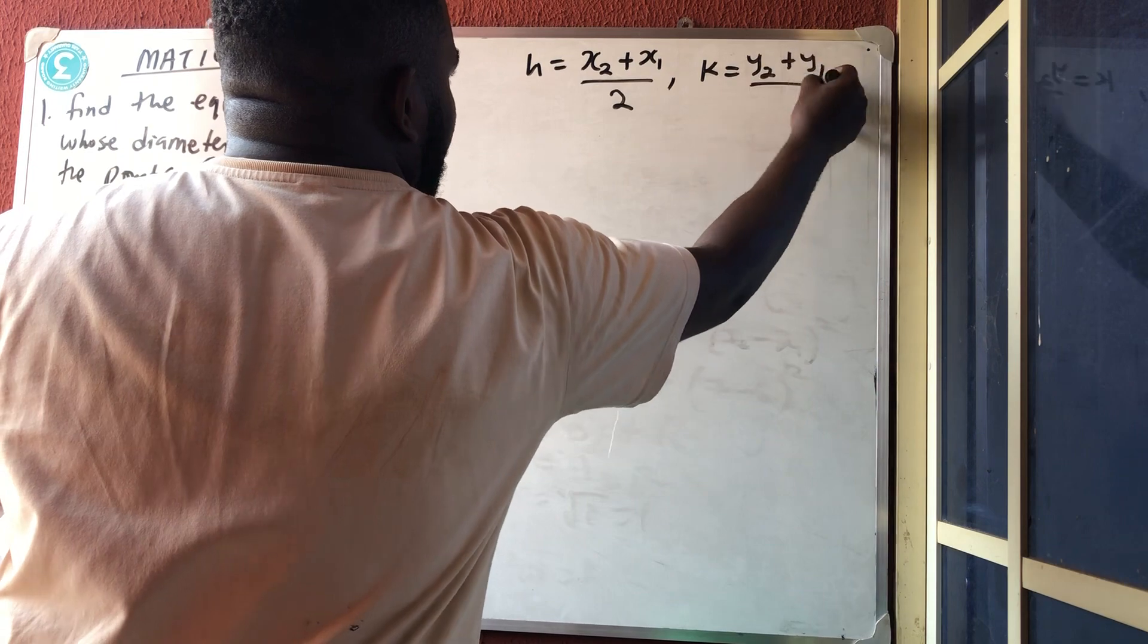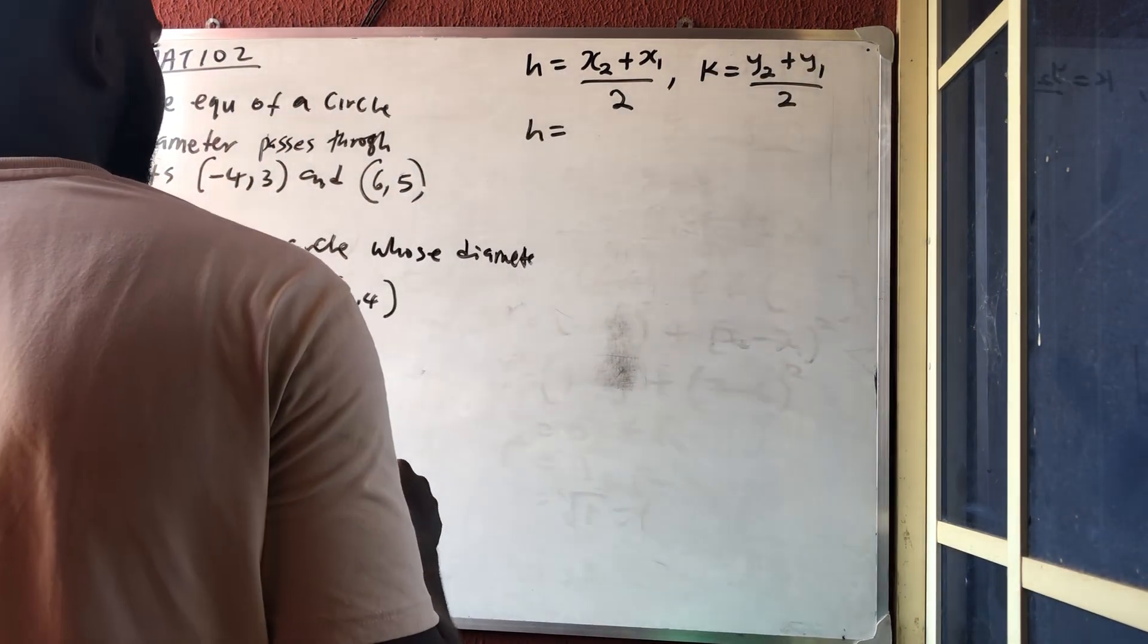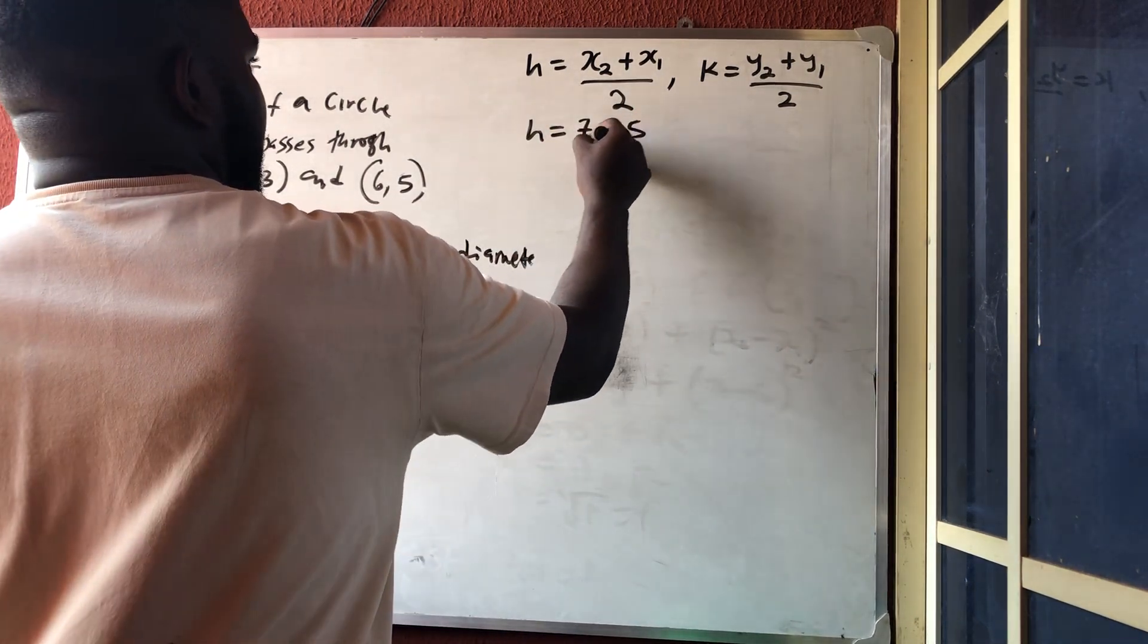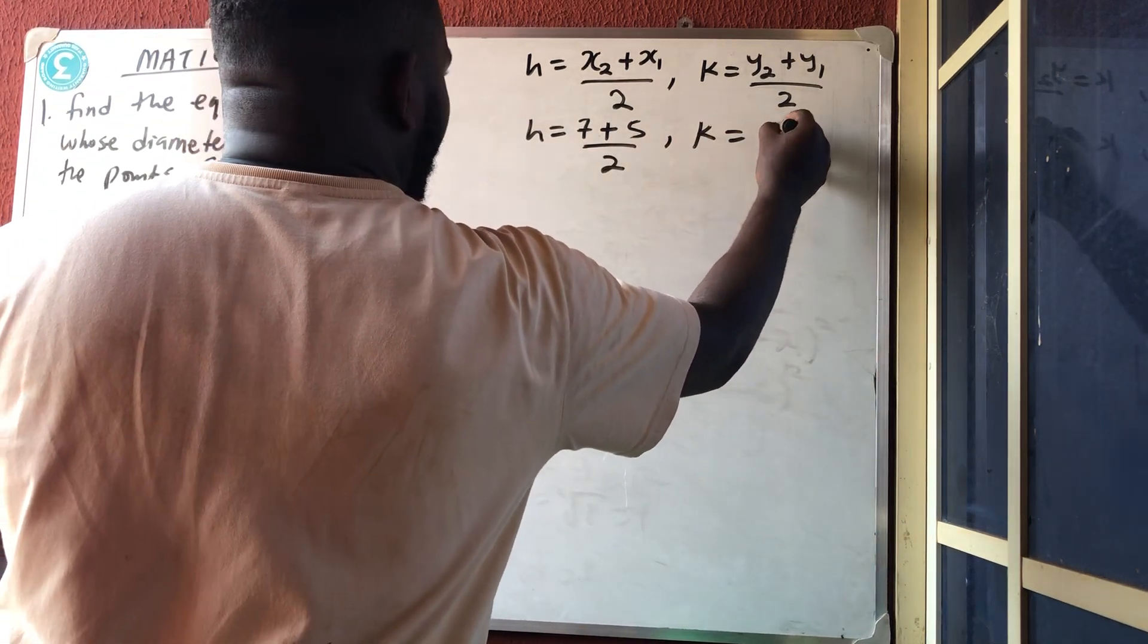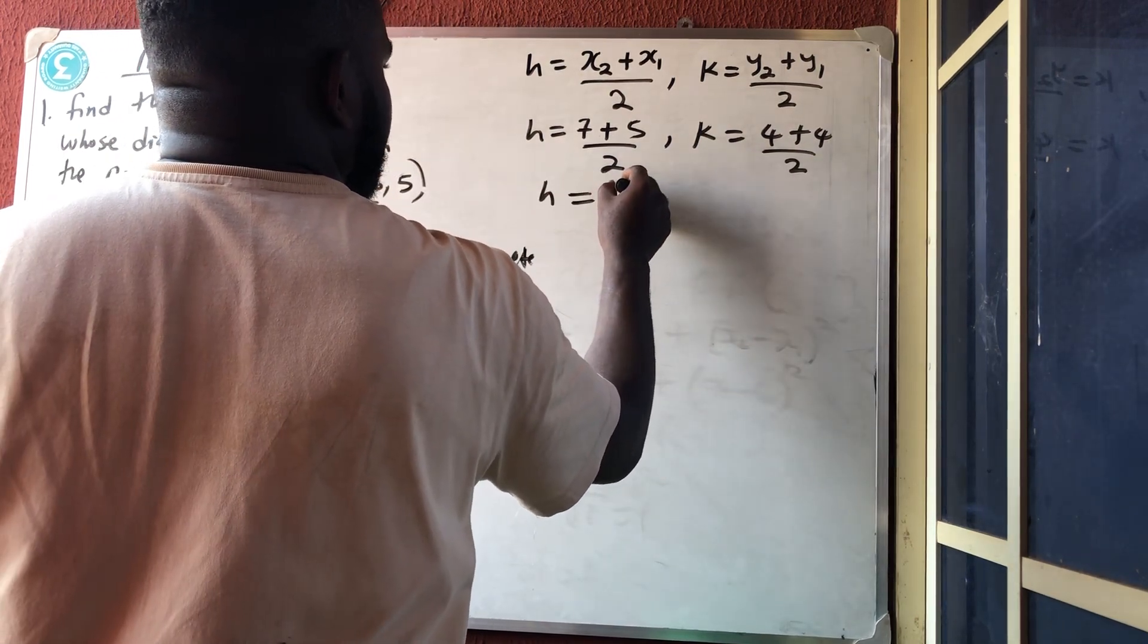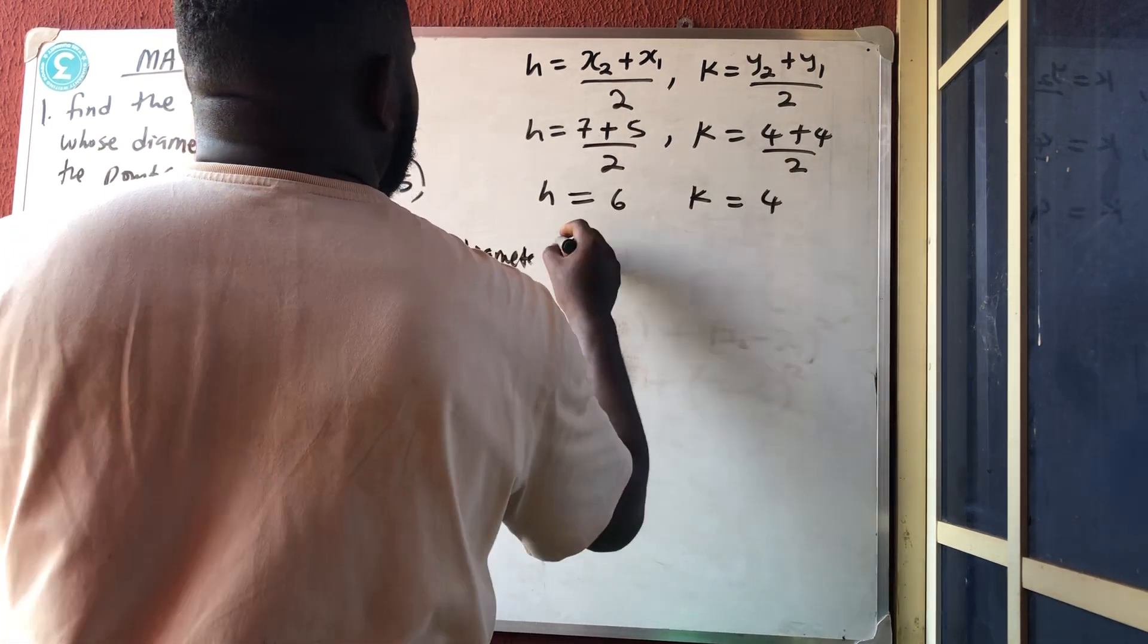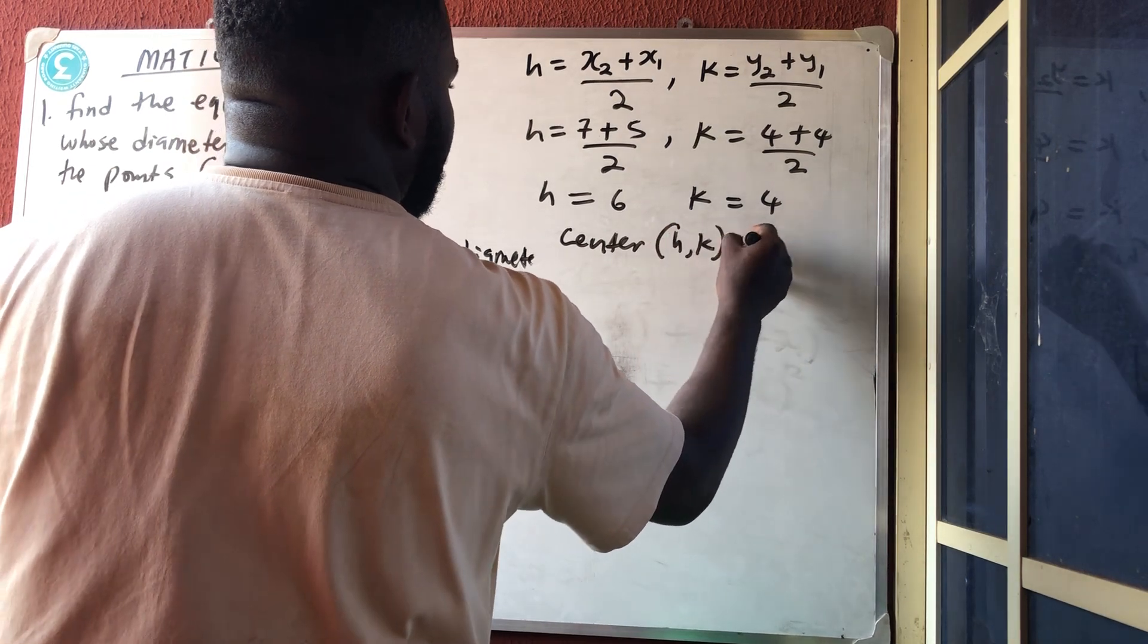So h is equal to x₂ which is 7 plus x₁ which is 5, all over 2. That gives us h equals 2×3 divided by 2 which is 6. And my k is 4 plus 4 over 2, which is 4. So the center which is h comma k is 6 comma 4.